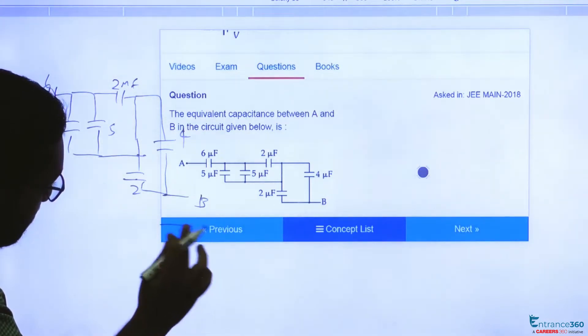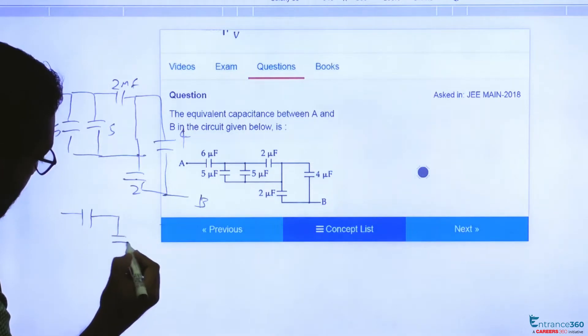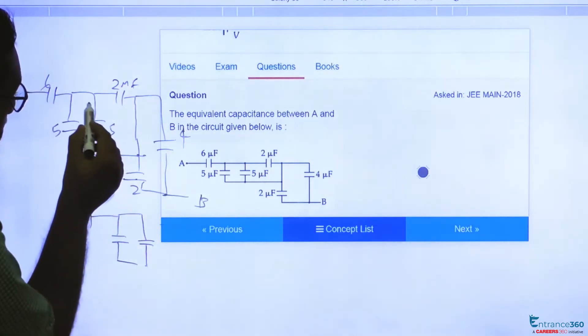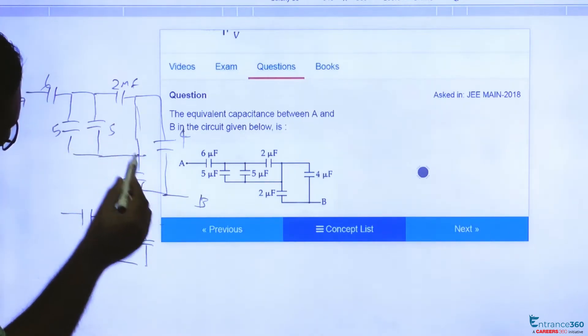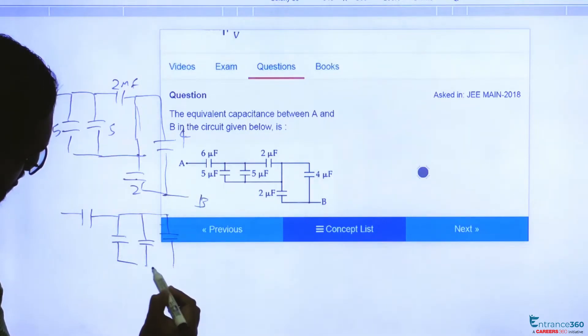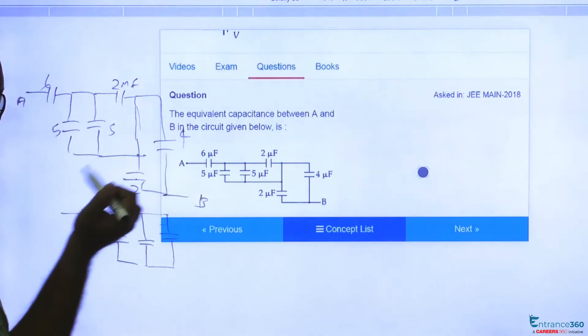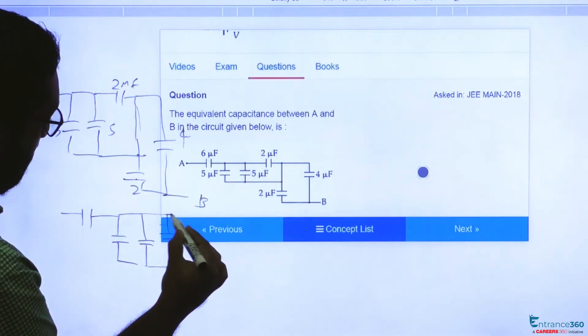Let's redraw this. We have 6 microfarad, 5, 5. See, this 2 microfarad is connected across this 5 microfarad, so these are also in parallel. 2 and 4 in parallel, and the combination of 2 and 4 will be 6.